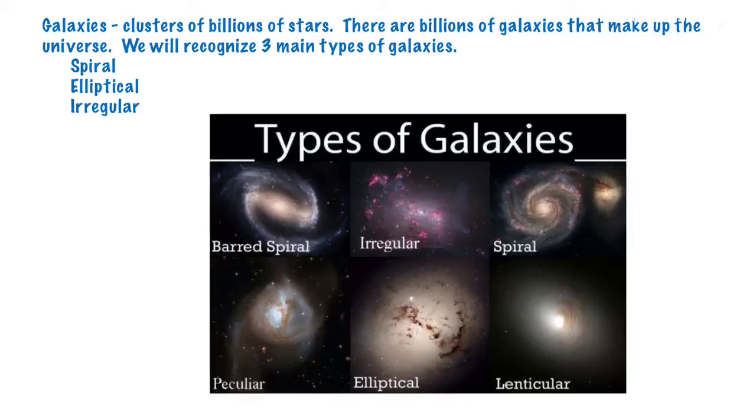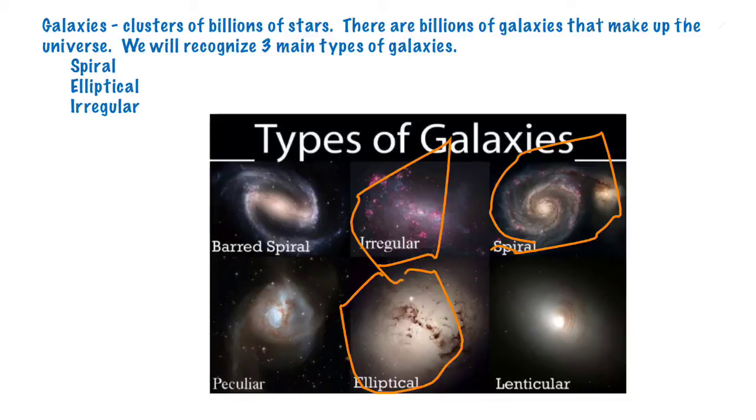If you look at the diagram here, we're going to be looking at spirals, irregulars, and ellipticals. The other ones shown are just versions of each of these.